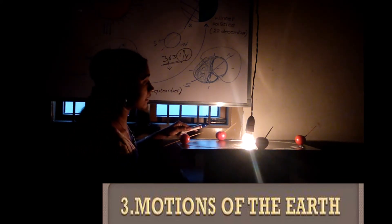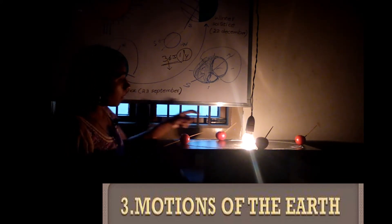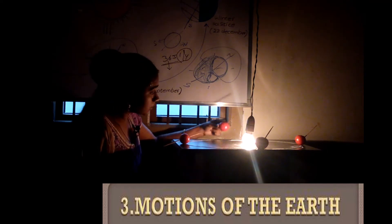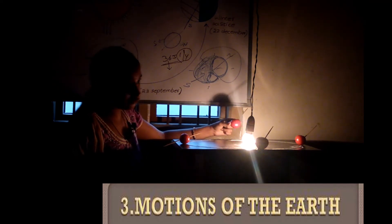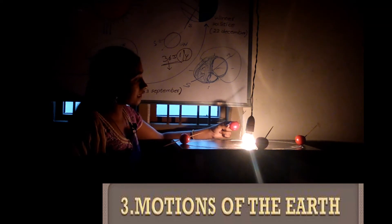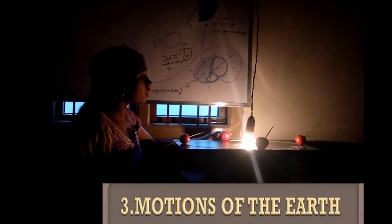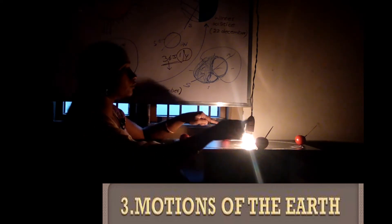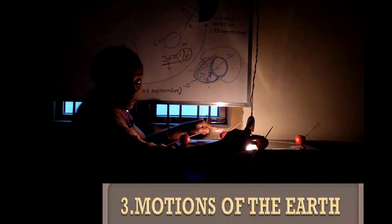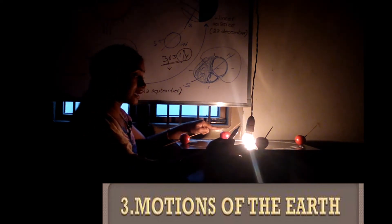Coming to equinox — here it is equinox. It is almost half the part in light and half not in light. That is the reason why here it is equal days and equal nights. One side is spring season and the other side is autumn season.